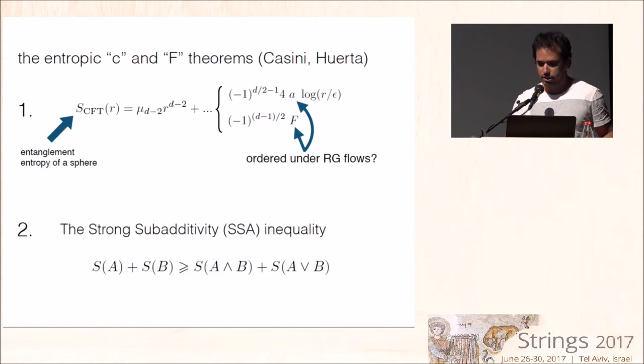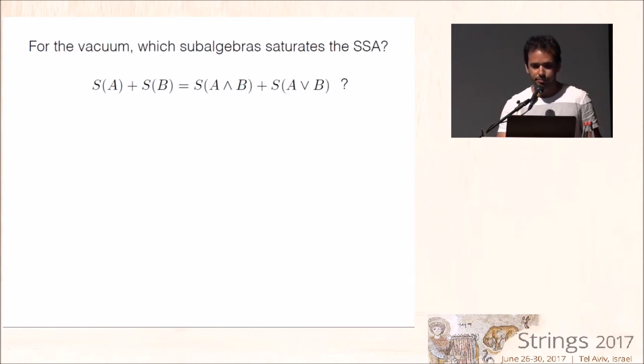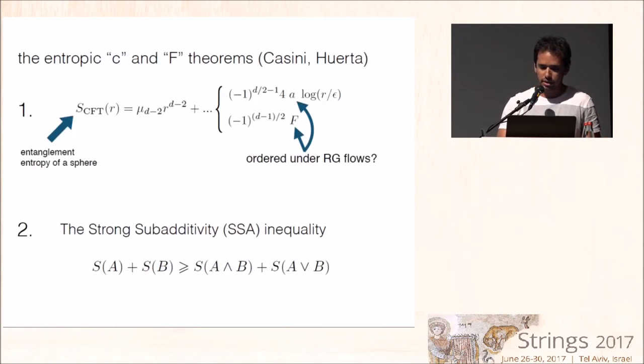And the second is this strong subadditivity inequality for the entanglement entropy or von Neumann entropy where A and B are subalgebras and this is the union and the intersection. So this strong subadditivity inequality, when applied to the vacuum, allows us to prove in two and three dimensions the C and F theorems. And in general, it leads to a second order inequality. So there is some hope to reach the case of D equal four, which is called the A theorem.